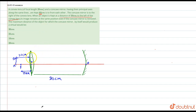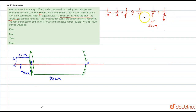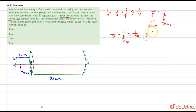First we will find the image distance for the convex lens using the lens formula: 1/V minus 1/U equals 1/F, which implies 1/V equals 1/F plus 1/U. The focal length F is 20 cm and the object distance U is minus 30 cm by sign convention. So 1/V equals 1/20 minus 1/30, which gives 1/V equals 1/60, so V equals 60 cm.